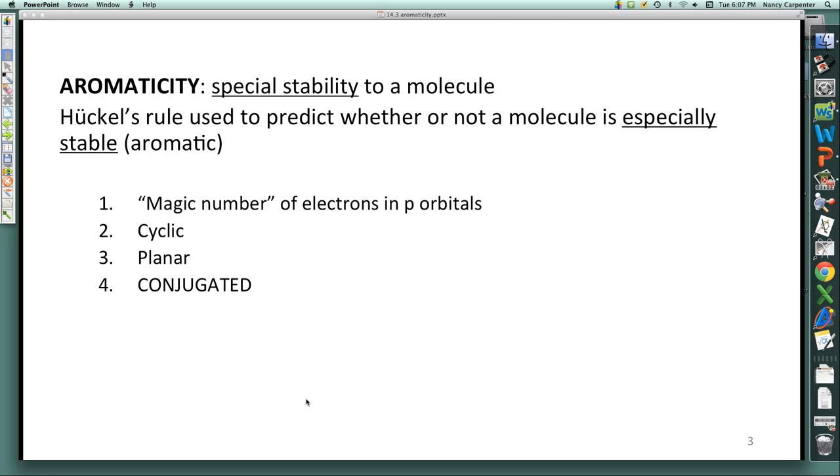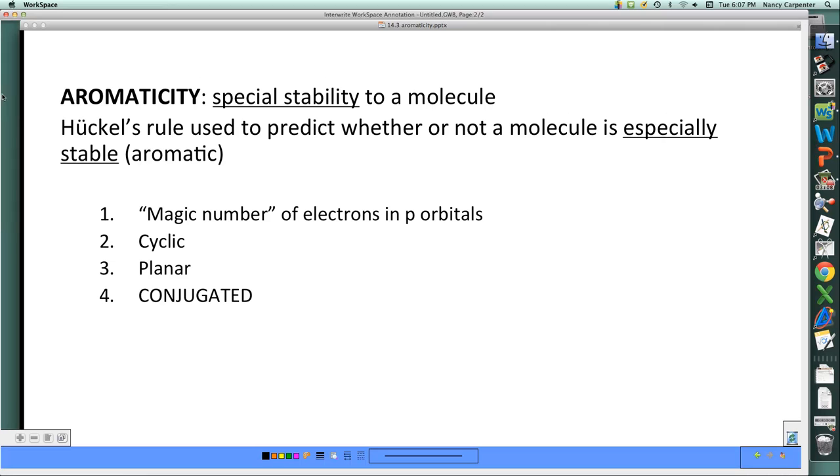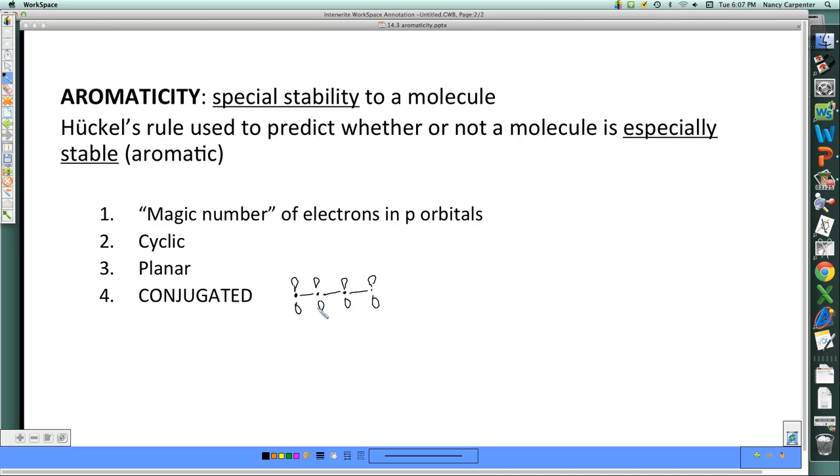Remember what I'm talking about when I say conjugated, particularly in this chapter, is that for each atom in a row, each atom and its next-door neighbor, all along the row in some kind of cycle, has a p-orbital. So must have a p-orbital. It may be empty, it may be filled, but every atom right next door has a p-orbital on it.